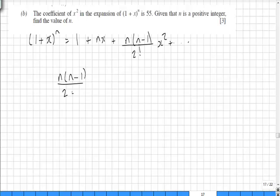So n(n-1) over 2 factorial is equal to 55. 2 factorial is 2 times 1, which is just 2. So multiplying both sides by 2 gives us n(n-1) is equal to 110.